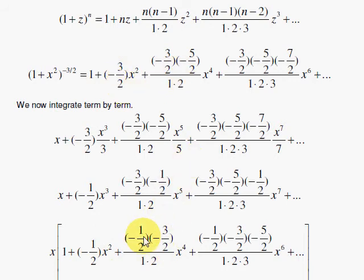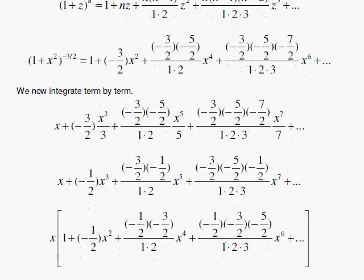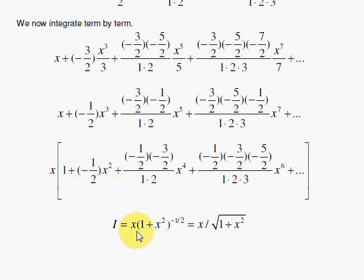But I'm using the same principle of subtracting the 1 and subtracting the 1 again. So in other words, this minus 3 halves is now minus 1 half. So this result is x times 1 plus x squared to the minus 1 half power, which you can write this way. So we have done the integral.